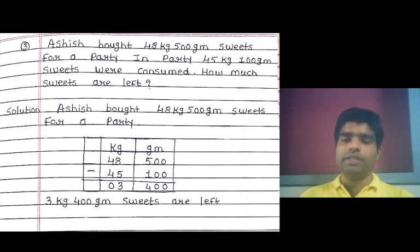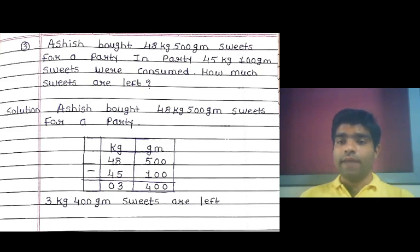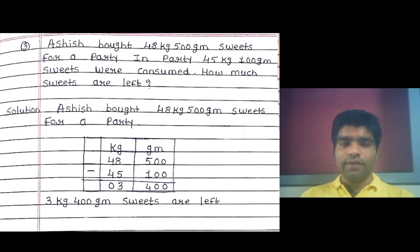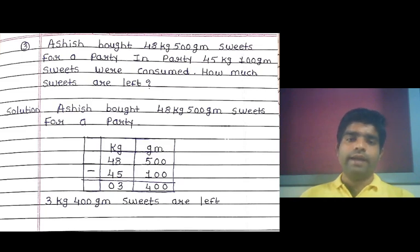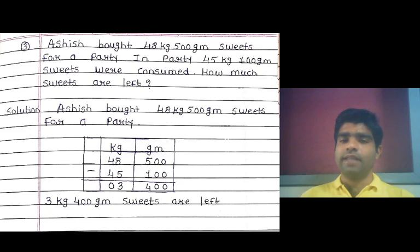We use the subtraction sign because out of 48 kg 500 grams of sweets, 45 kg 100 grams were consumed and we need to find how much is left. Solving: in grams — 0 minus 0 is 0, 0 minus 0 is 0, 5 minus 1 is 4. In kilograms — 8 minus 5 is 3, 4 minus 4 is 0. The answer is 3 kg 400 grams of sweets are left.